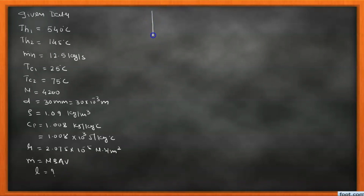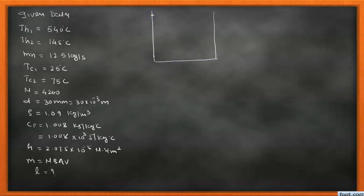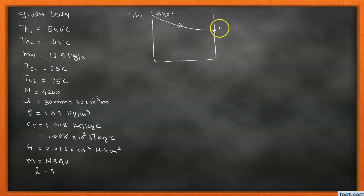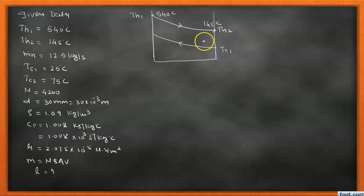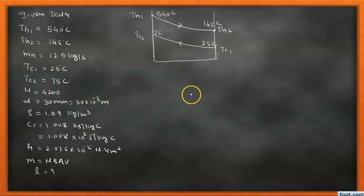First we plot the temperature distribution diagram. This is a counterflow arrangement, so the hot fluid enters with Th1 = 540°C and exits at 145°C, while the cold fluid enters in the opposite direction with Tc1 = 25°C and exits at Tc2 = 75°C.